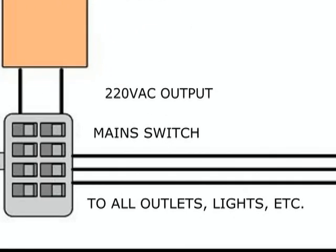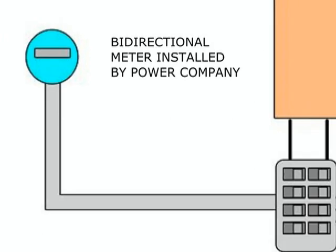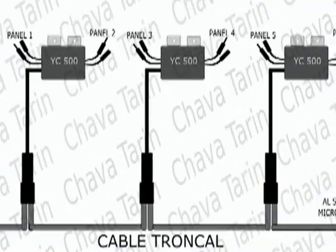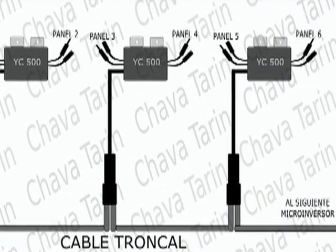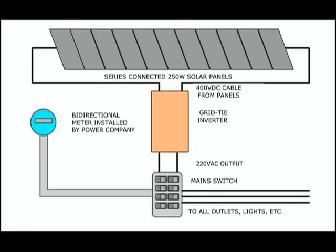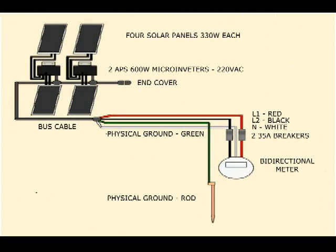The string inverter delivers the appropriate AC voltage both to be used at home and to be returned to the power company lines. This type of installation works reasonably well, but has to be sized and performed by experts in both solar energy and electricity. There is another much friendlier possibility for those who prefer to do things themselves. In this video we are going to make a comparison between both systems for those who are considering installing photovoltaic solar energy at home.